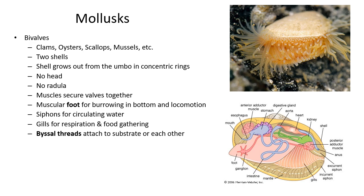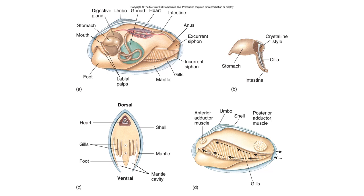Bivalves are anything with two shells — clams, oysters, scallops, and mussels. They don't have a head or a radula. They have strong muscles for pulling their shell together for protection and a foot for burrowing in the bottom or even swimming. They may have a siphon for circulating water for filter feeding, gills for breathing, and some have byssal threads to attach to surfaces. Their internal anatomy includes reproductive, circulatory, and digestive structures.